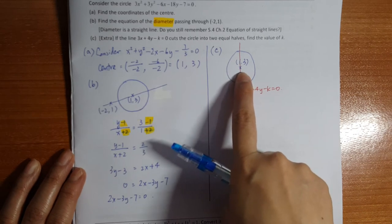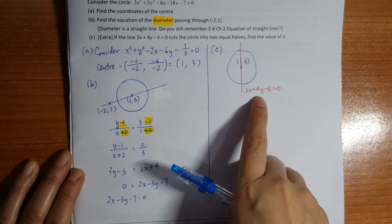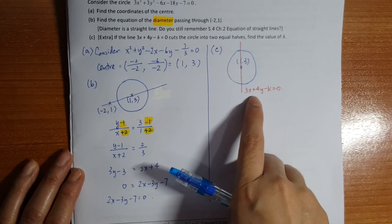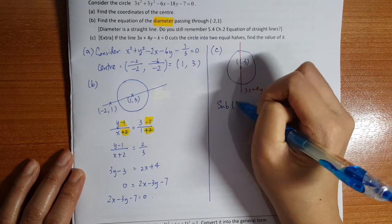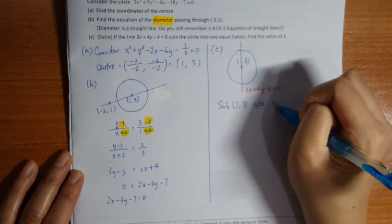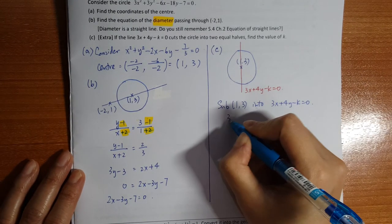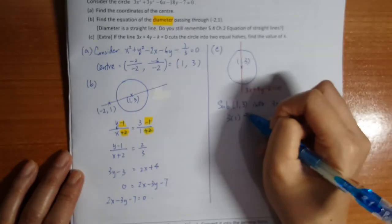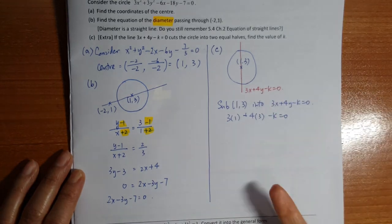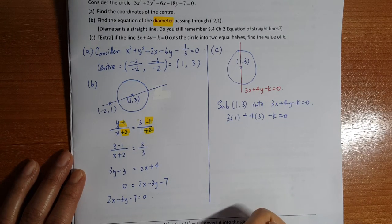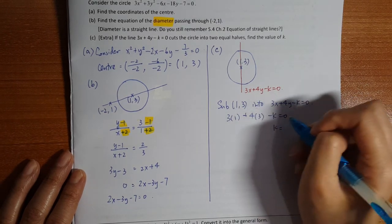It's very simple. You can see this line has what kind of property. It's passed through 1, 3. Pass through 1, 3 means what? It means that 1, 3 is satisfied. If I put 1, 3 to the left hand side, it should be very easy. I just sub 1, 3 into the equation 3x plus 4y minus k equals to zero. Because it must pass through, so I don't need to separate left hand side, right hand side, because it must be correct. So k is 15.